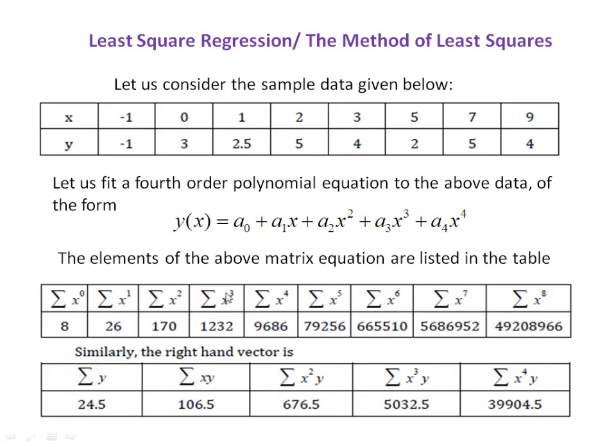The elements of matrix X include: sum of x^0 (which is the total number of x values), sum of x^1 (sum of all x values), sum of x² (sum of squares of x values), and so on. Similarly, the elements of the right-hand vector B are: summation of y, summation of x*y, summation of x²*y, summation of x³*y, and summation of x⁴*y.